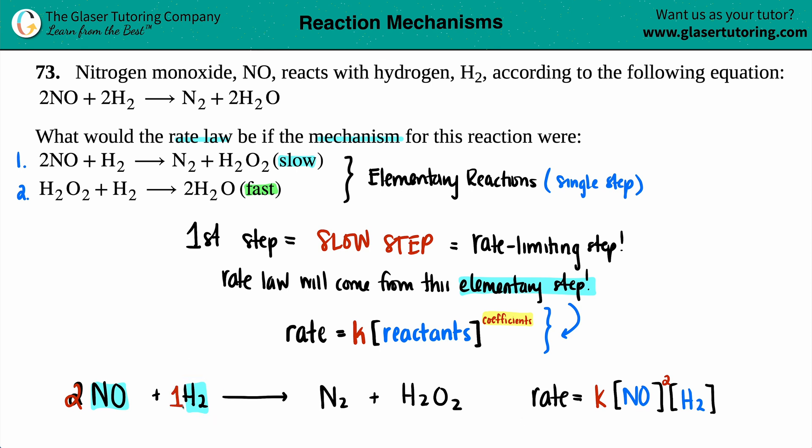H2 had a 1 in front. So you can put the 1 up here, but it doesn't really matter. Anything raised to the first is itself. And that's the answer here. What was the rate law for this general reaction? It's this.